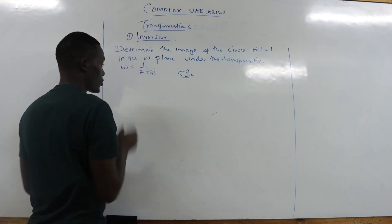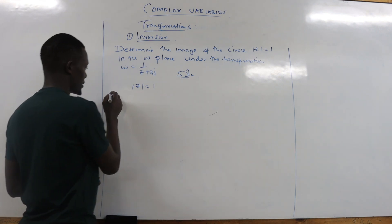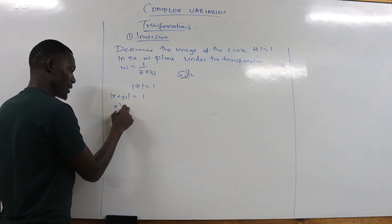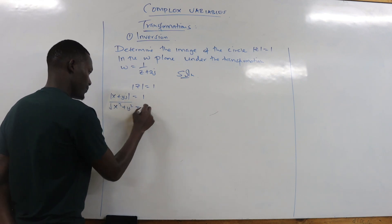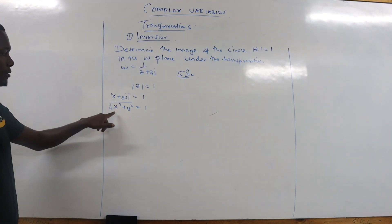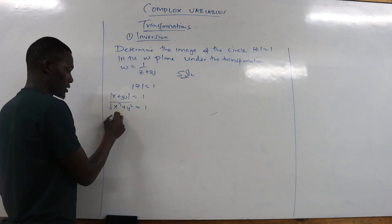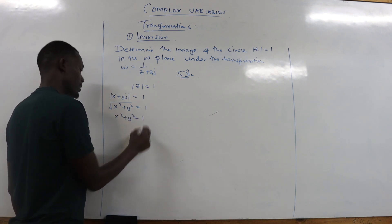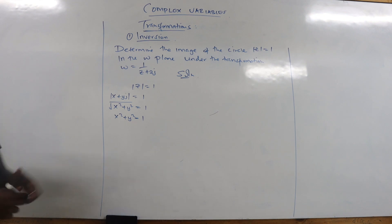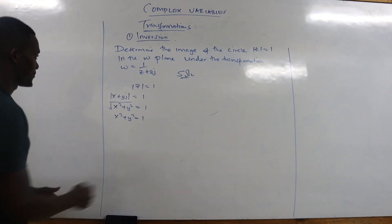We start by finding the equation of the circle. We have |z| = 1, which is given by |x + yj| = 1. Squaring x and y, we get the magnitude: x² + y² under the square root equals 1. Square both sides to remove the square root, giving x² + y² = 1² = 1. Therefore, the equation of the circle is x² + y² = 1.